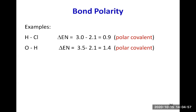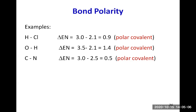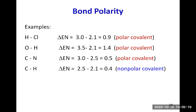The C–N bond: nitrogen has an electronegativity of 3.0 and carbon 2.5, giving a difference of 0.5 — considered borderline polar covalent. The C–H bond: carbon is 2.5, hydrogen is 2.1, giving a difference of 0.4 — considered non-polar covalent. Any molecule that has only C–H or C–C bonds has non-polar bonds.